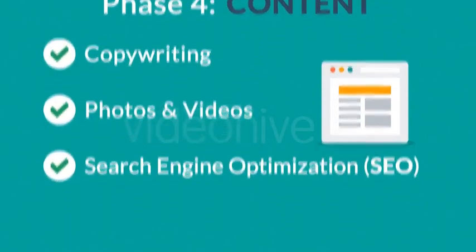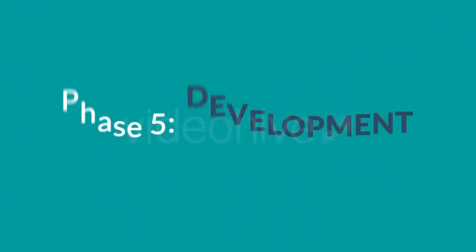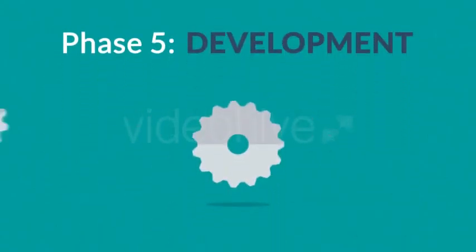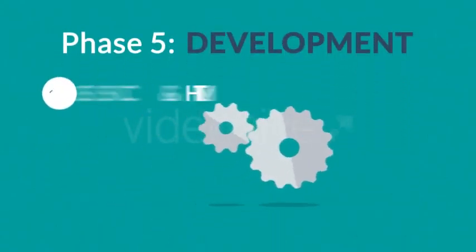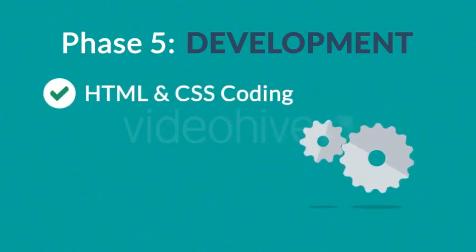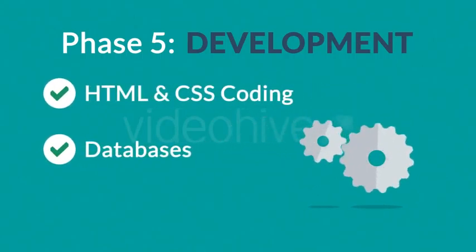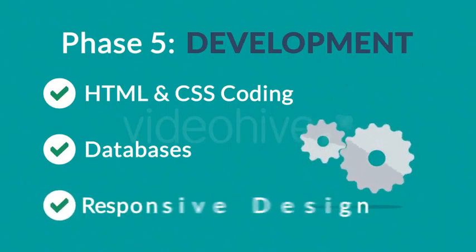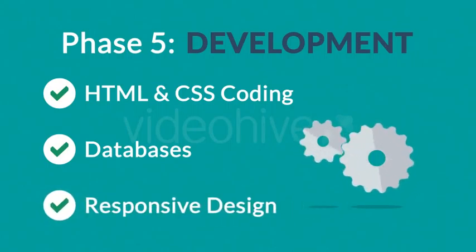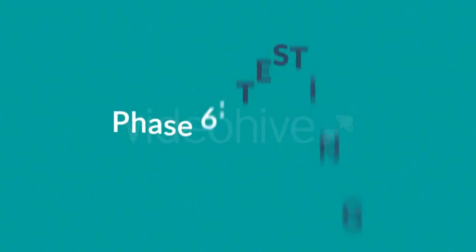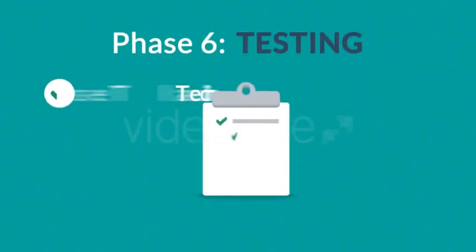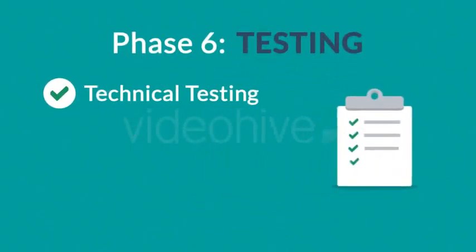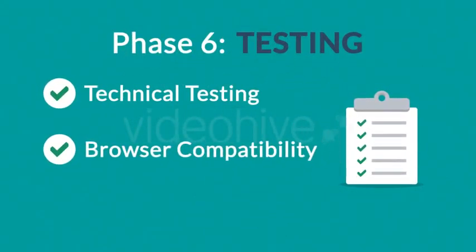Phase four: Content. A very important part of the process is choosing the right text, photos, or videos — all optimized not only for your visitors but also for search engines. Phase five: Development. Here we actually create the website using hypertext markup language and cascading style sheets, with help from databases and other technologies as needed. Our websites can be made accessible to mobile devices too.